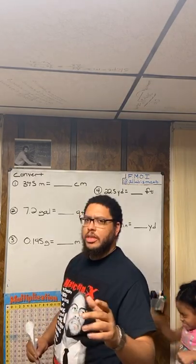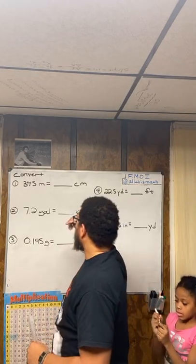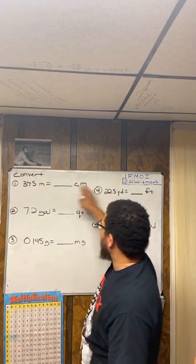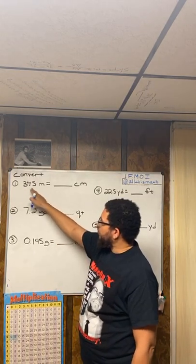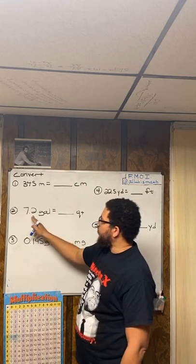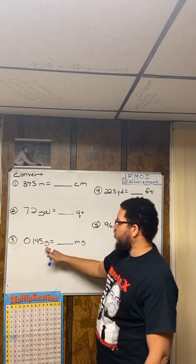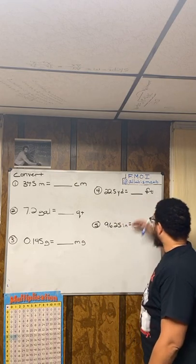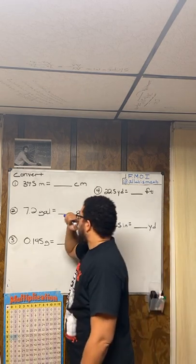She has a student that's having some issues with these, so that's the purpose of this video. I've got five examples up here. I want to convert 345 meters into centimeters, 7.2 gallons into quarts, 0.145 grams into milligrams, 22.5 yards into feet, and last but not least, 96.25 inches into yards.